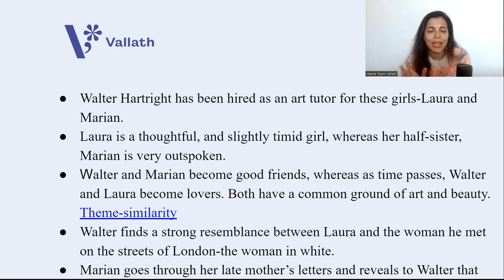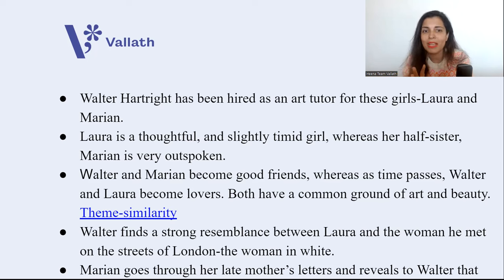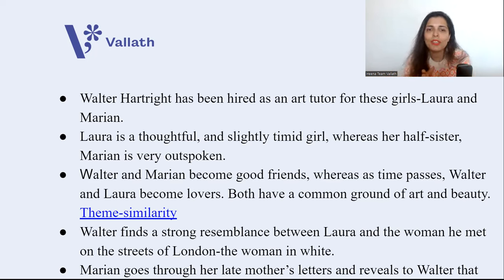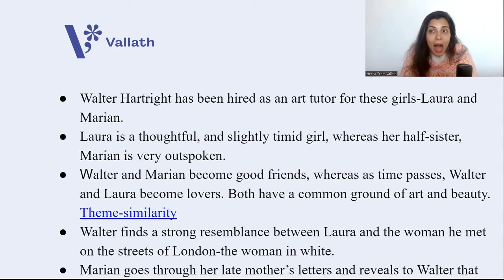Laura is a thoughtful, slightly timid girl, whereas her half-sister Marion is very outspoken. Marion is considered to be the finest caricature in Victorian era novels by many critics. She is intelligent, not beautiful, but she has a great brain and sixth sense — she can sense what is going on in people's minds. Laura, on the contrary, is beautiful and simple, remaining in her world of art and beauty. Walter and Marion become good friends over the course of a few months, while Walter and Laura become lovers — love happens between them because both share a common ground of art and beauty.